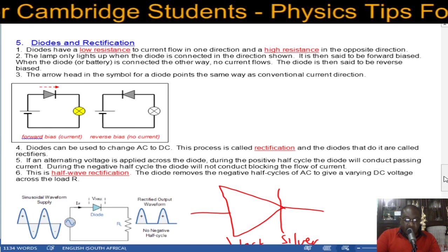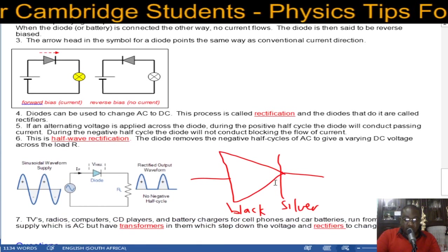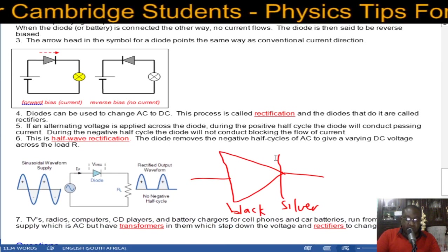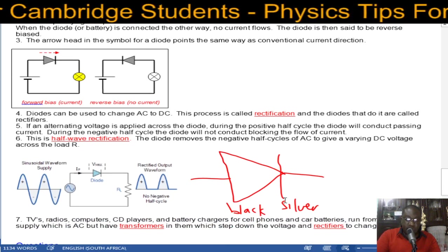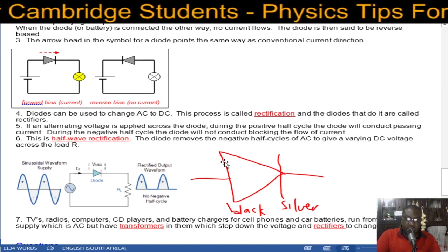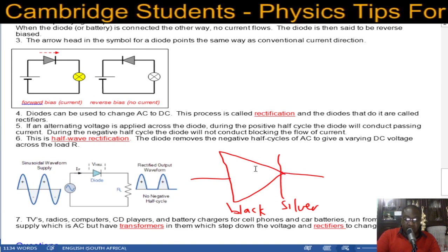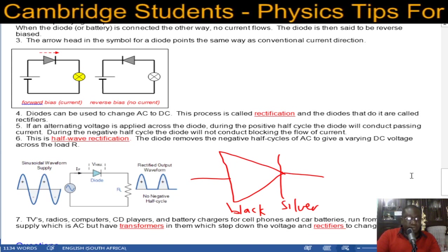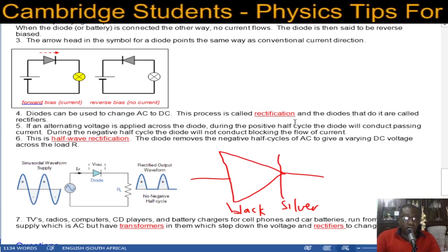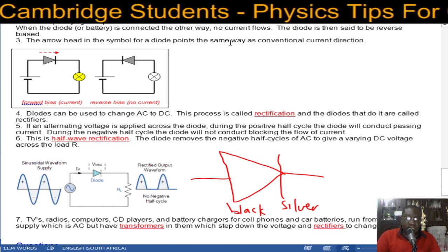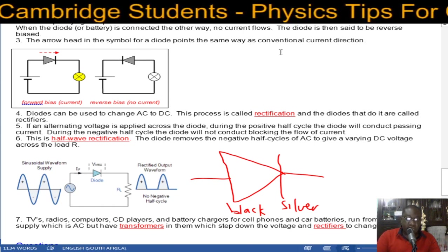In practical diodes you find that most of them are black and silver. The black part will be this part here and the silver part will show you that. So you cannot connect the silver part first. You've got to connect the black part first then the silver. The arrowhead in the symbol for a diode points the same way as conventional direction of current.